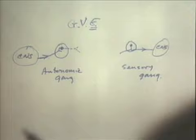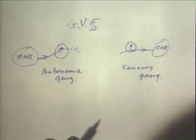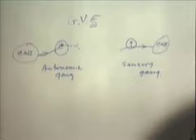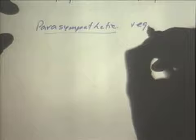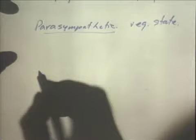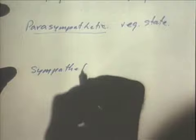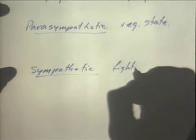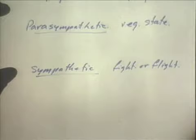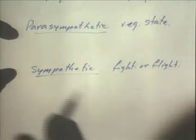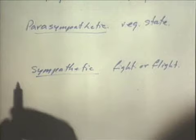The general visceral efferent can be divided into the sympathetic system — the fight-or-flight or emergency system — and the parasympathetic system, which is called the vegetative state: eating, sleeping, general daytime behavior. The sympathetic is something you might experience just before an exam.